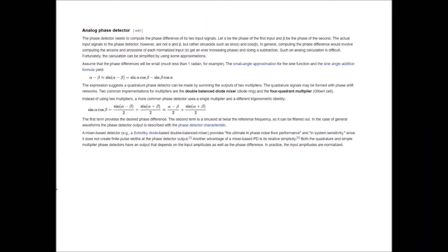Under the heading of five types analog phase detector. The phase detector needs to compute the phase difference of its two input signals. Let A be the phase of the first input and beta be the phase of the second. The actual input signals to the phase detector however are not alpha and beta but rather sinusoids such as sine of A and cos of beta. In general computing the phase difference would involve computing the arcsine and arccosine of each normalized input to get an ever-increasing phase and doing a subtraction. Such an analog calculation is difficult.